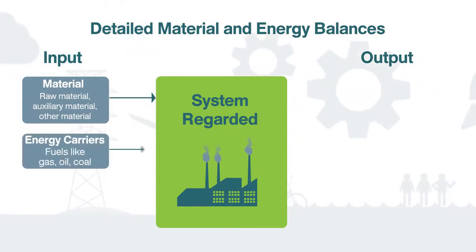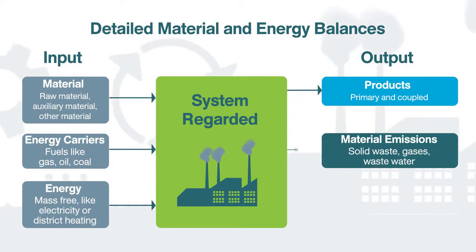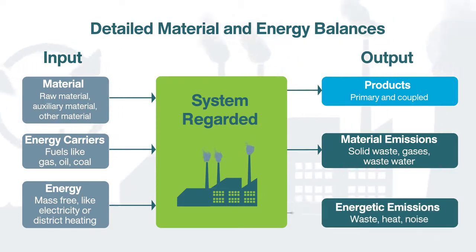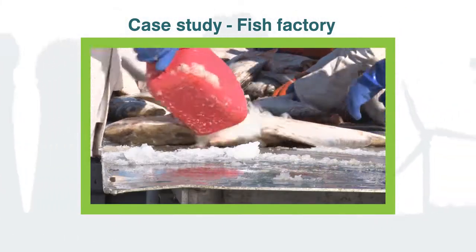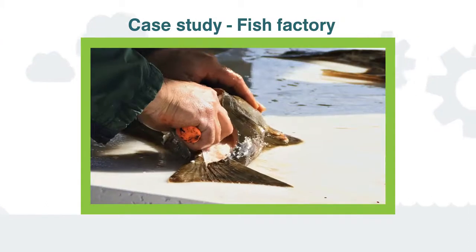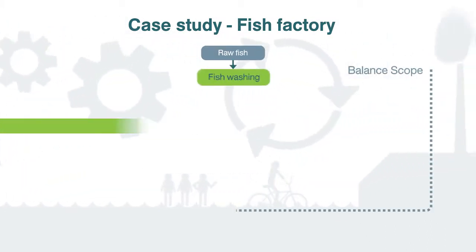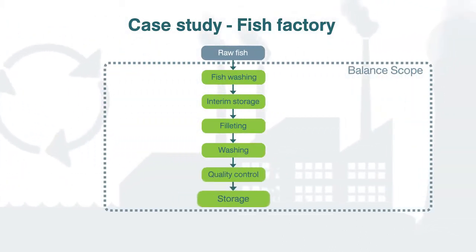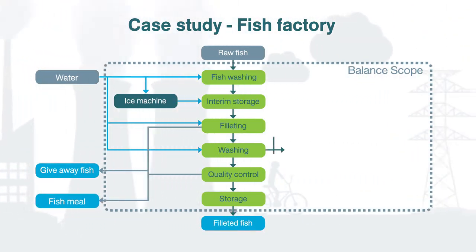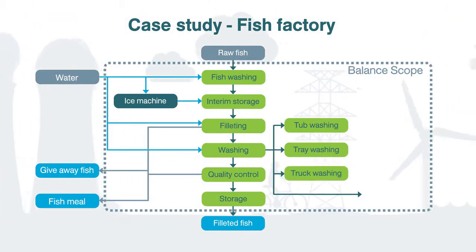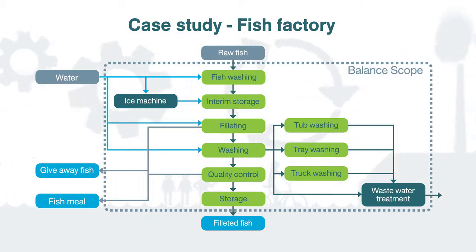On completion of the material balance, the user will have a process map of all the input and output material flows and their quantities. This then allows the user to assess where losses and excessive flows occur and to strategize around the implementation of an appropriate intervention program.